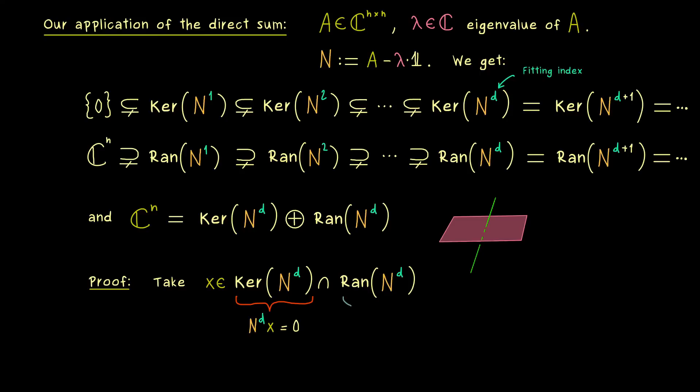And on the other hand, being in the range means that we find another vector in C^n, which is mapped to x. So we could write, there is a u in C^n, such that N to the power d applied to u is equal to x.